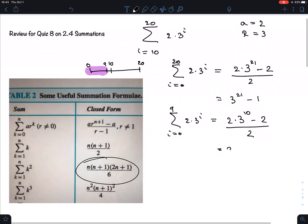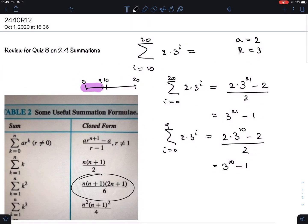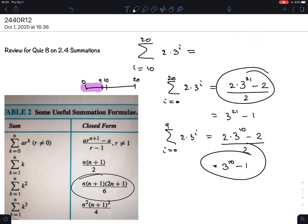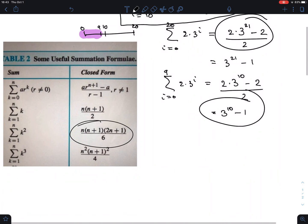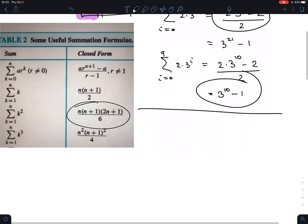So we get 3 to the 10 minus 1. This sum is equal to this one minus that one. That is 3 to the power 21 minus 1, minus 3 to the power 10 minus 1. You can even, for those that like pretty results, see that the 1s cancel out. But again, these are huge numbers, so there's no point in actually working out this number.